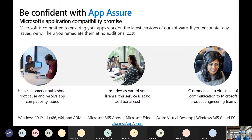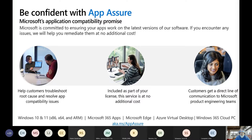Be confident with App Assure. This is a free service as long as you have 150 paid users or more. We're here to help customers troubleshoot root causes and resolve app compatibility issues. It's also part of your license, so there's no additional cost. Customers get a direct line of communication to Microsoft product engineers. This covers Windows 10 and Windows 11, x86, 64-bit and ARM, Microsoft 365 Apps, Microsoft Edge, Azure Virtual Desktop, and Windows 365 PC. If you have an application running on an older OS because it needs a certain browser version, reach out to us — we can help you get that app off of that device so you can upgrade the operating system.